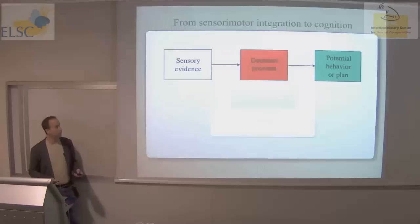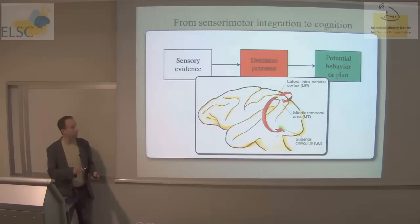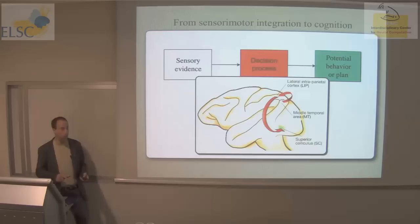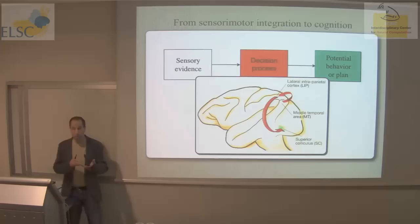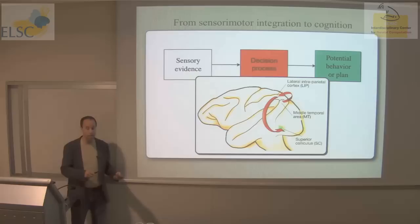If we record from neurons in the association cortex of the parietal lobe, in particular area LIP — the lateral intraparietal area — we find many neurons there that are poised to take the evidence from vision and convert it through a deliberative, slow, prolonged phase into a plan to answer left or right by making an eye movement.